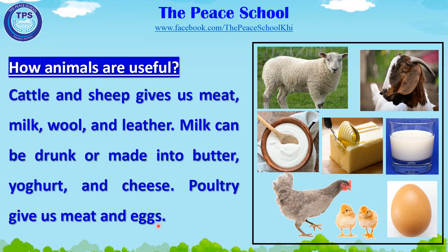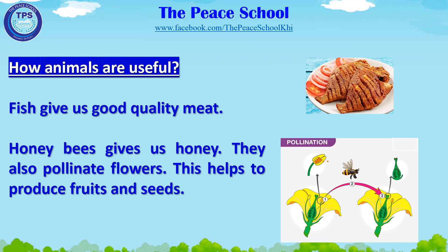Fish give us good quality meat. Honeybees give us honey; they also pollinate flowers, which helps to produce fruits and seeds.